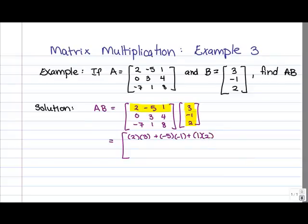Next, for entry 2, 1, we work with the second row of A, and again, the first column of B, and again, there's only one column in B. So what we've got is 0 times 3 plus 3 times negative 1 plus 4 times 2.